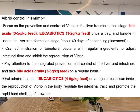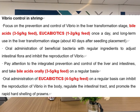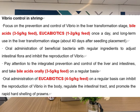Vibrio control in shrimp: focus on the prevention and control of vibrios in the liver transformation stage. Use bio acids at 3 to 5 g per kg of feed, and eucabiotics at 1 to 2 g per kg of feed, once a day, for long-term use during the liver transformation stage — about 40 days after seedling placement. Oral administration of beneficial bacteria with regular ingredients is recommended to adjust intestinal flora and inhibit the reproduction of vibrios.